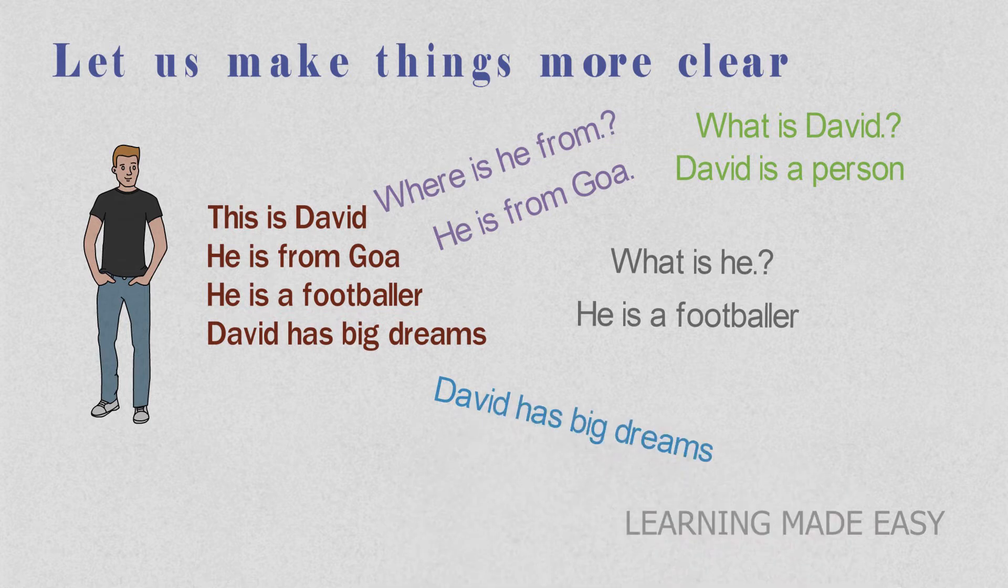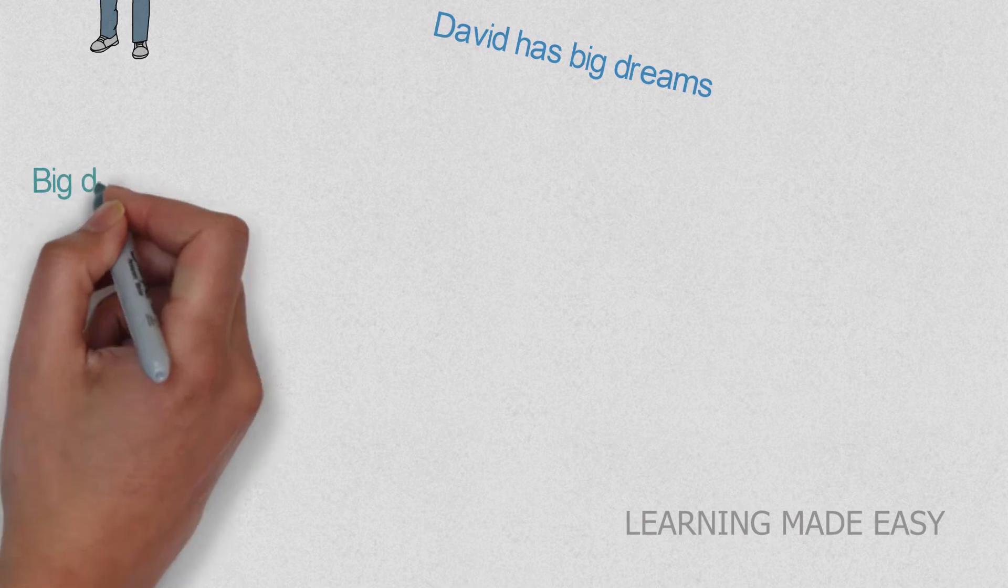Here when you talk about David, he is a person, so person is a noun. Then he is from Goa. Goa is a place, so it's again a noun. Then footballer—what is he? He is a footballer. Footballer is also a noun.